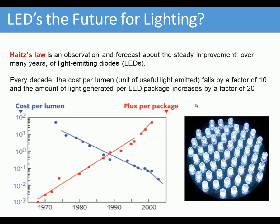Here's a phenomenon called Haitz's Law — a forecast about the steady improvement of LEDs over many years. Haitz basically said that every decade, the cost of useful light emitted falls by a factor of 10, and the amount of light generated per LED package increases by a factor of 10. So costs go down and light energy goes up, meaning the amount of light per unit of energy cost is increasing all the time.